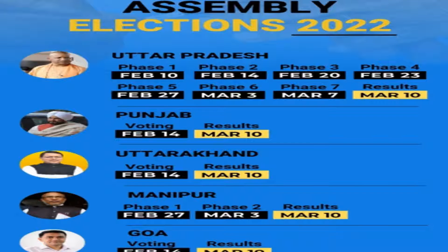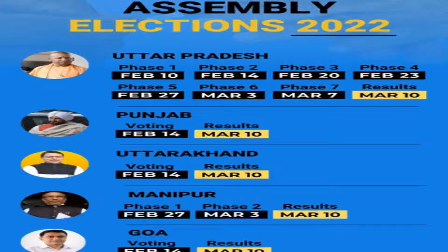All polling stations will be equipped with COVID mitigation facilities including sanitizers and masks, and the number of booths has been increased. More than 18 crore voters, including over 8.5 crore women, will be eligible to vote in the five state assembly polls.